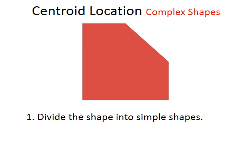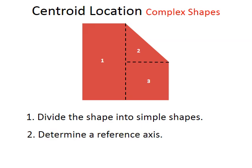We divide this shape into shapes that we know we can calculate the centroid for. It has three different shapes: shape one is a rectangle, shape two is a triangle, and shape three is a square. We know from our last video clip the formulas on how to calculate those.